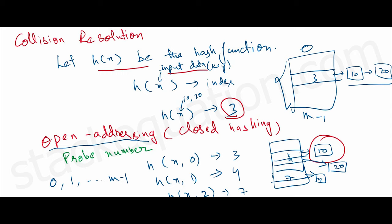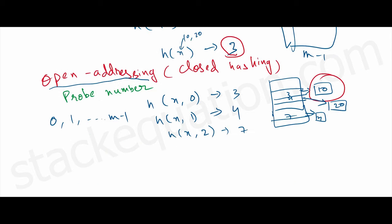Open addressing is a very simple concept where, if at the first time—let's say the data input is x—it will return an index.